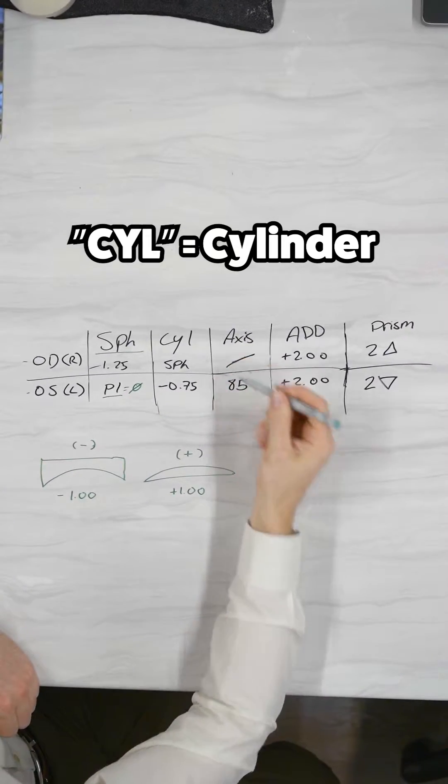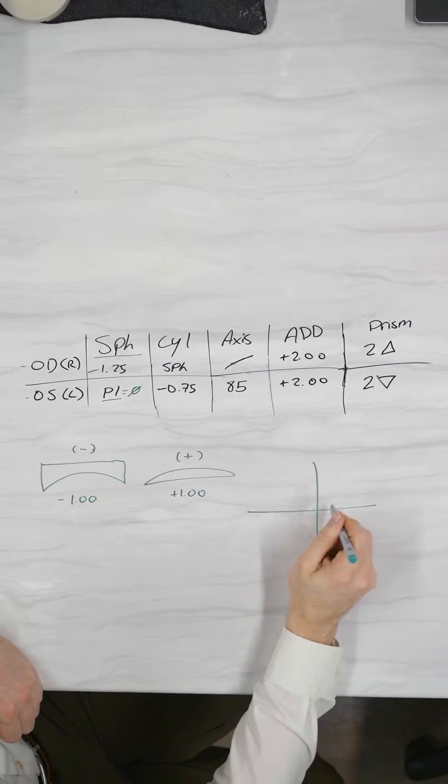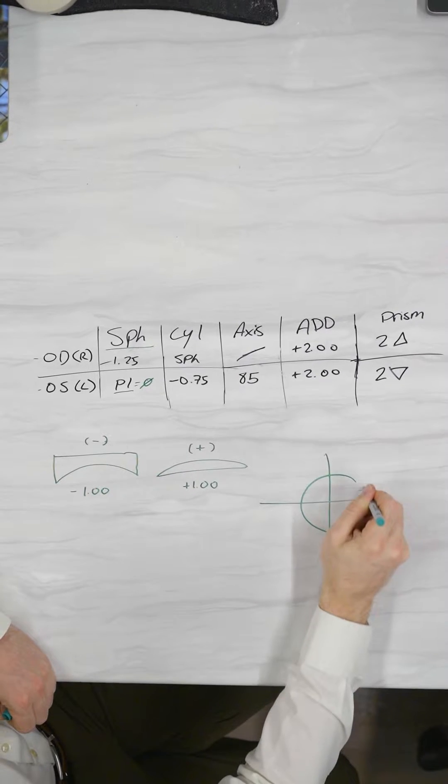The next thing on the prescription is CYL or Cylinder. This represents astigmatism. When SPH is put in the cylinder column, this represents a spherical lens without astigmatism or shape control.